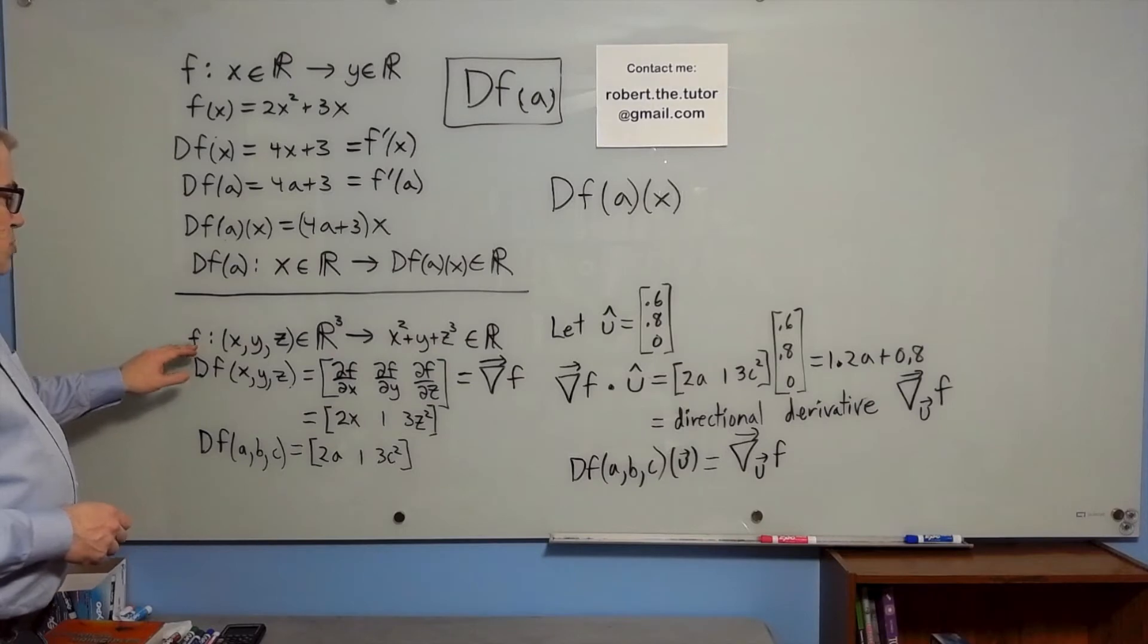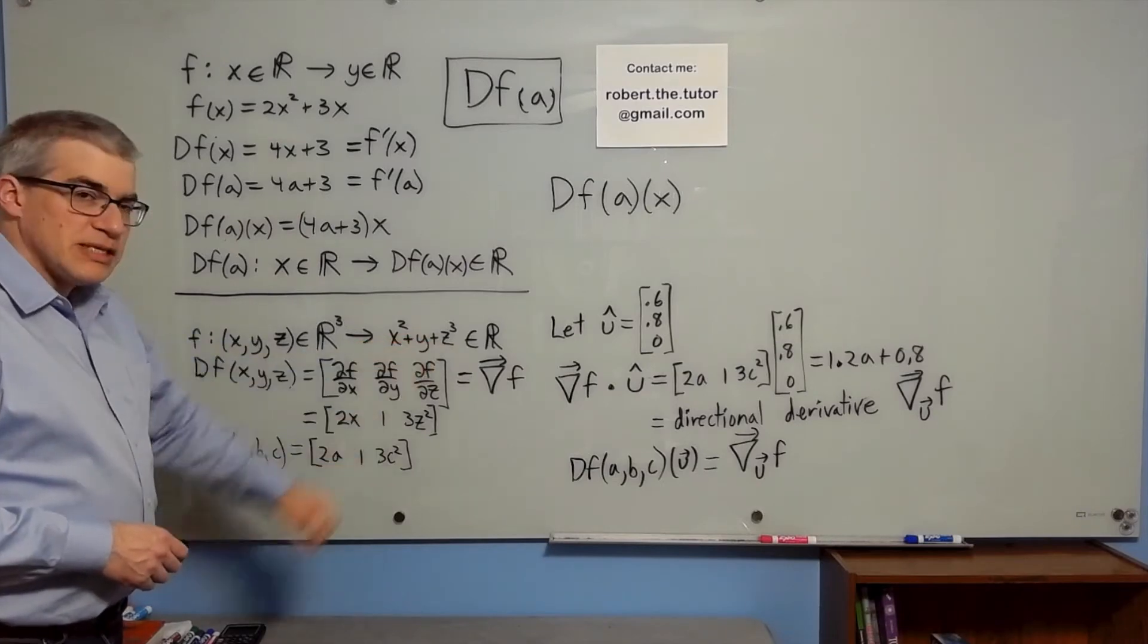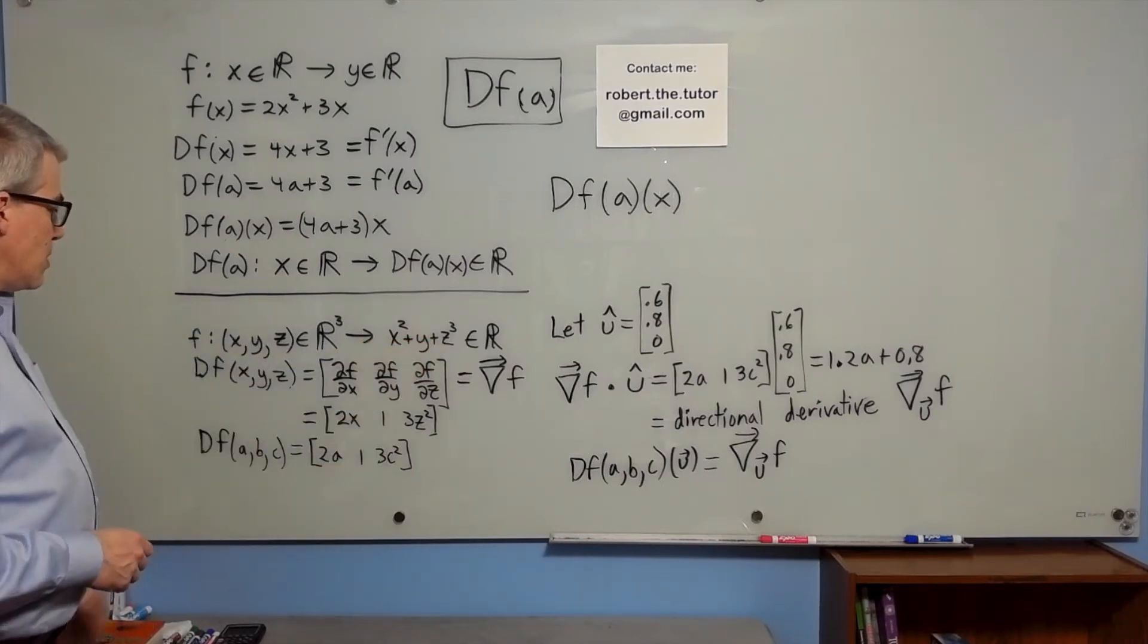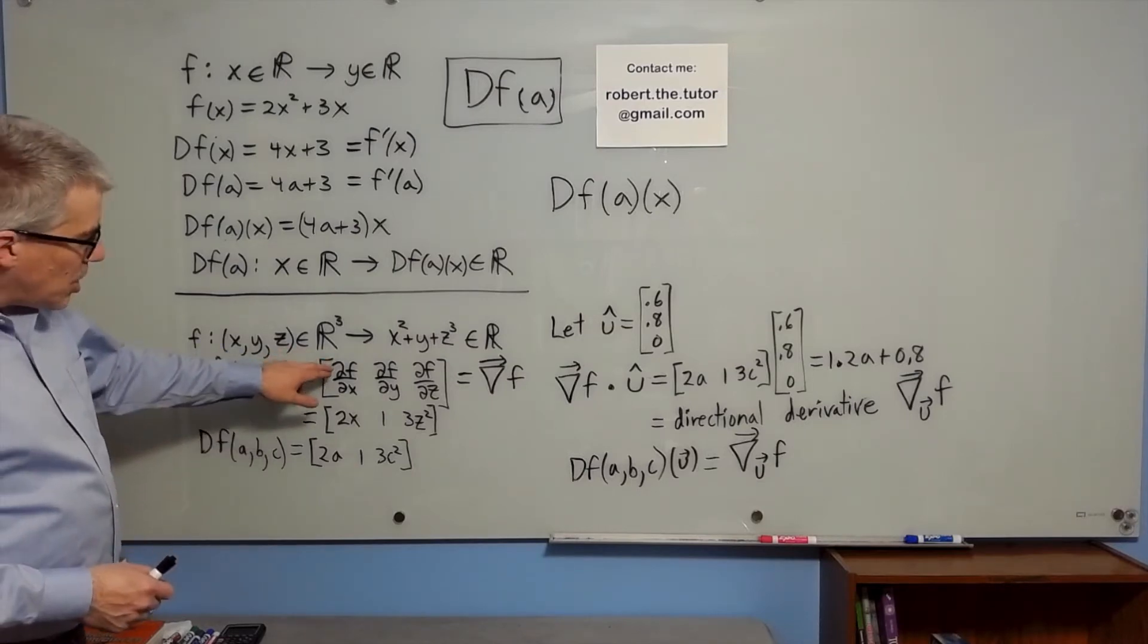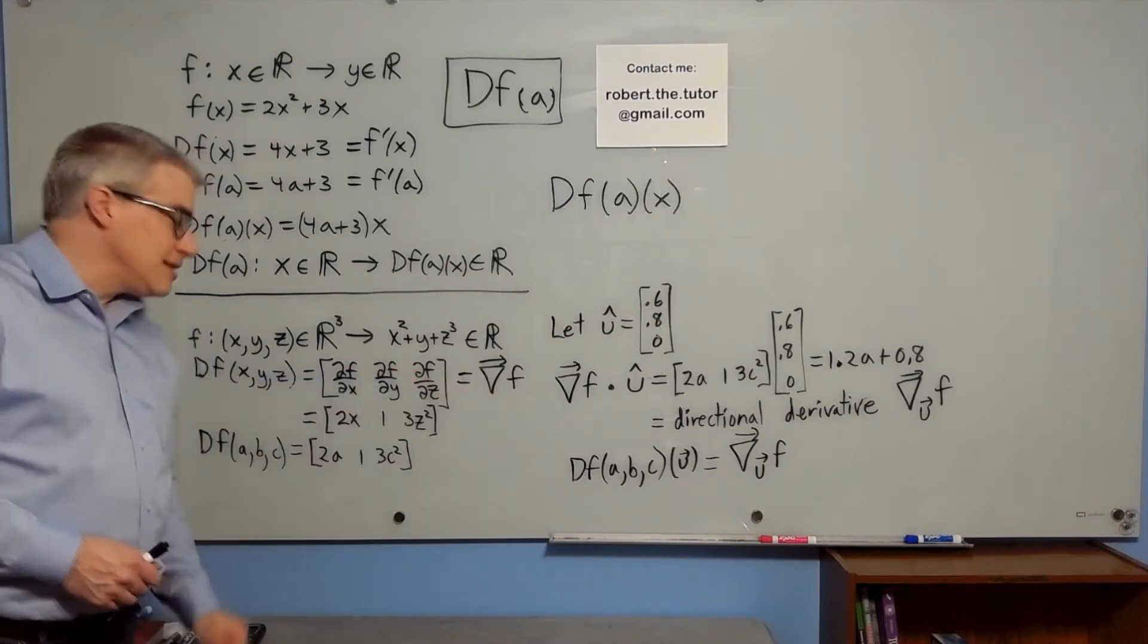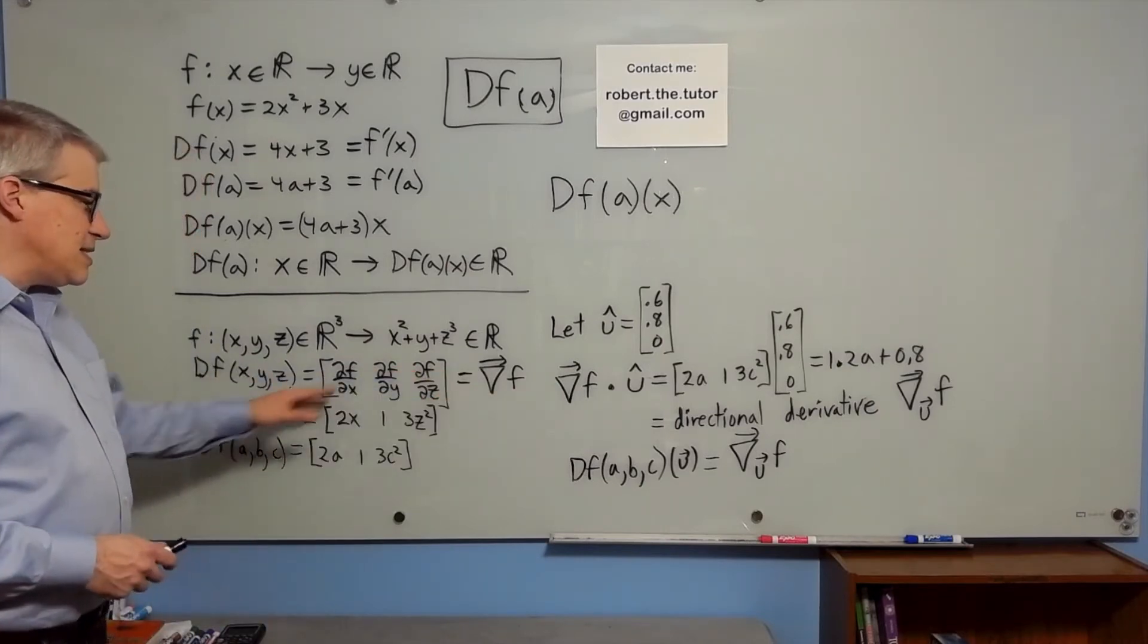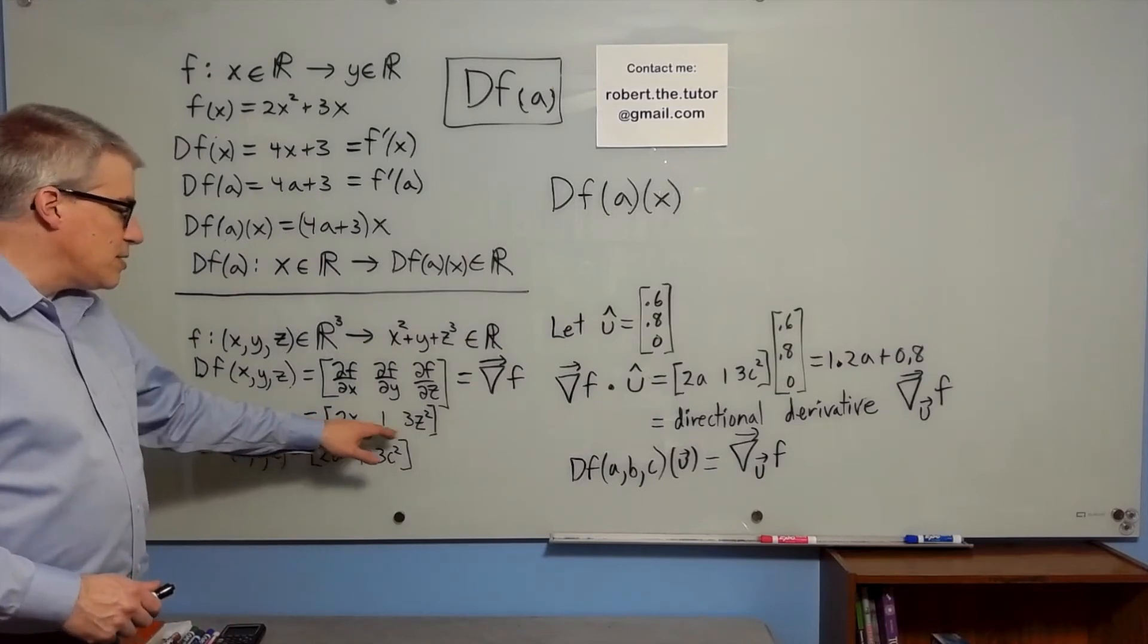Now, suppose we have a function of three variables that gives out one number. And let's say the function is x squared plus y plus z cubed. df of x, y, z means partial f partial x, partial f partial y, partial f partial z. It's the gradient. df of x, y, z is the gradient in this case. In particular, 2x, 1, 3z squared.